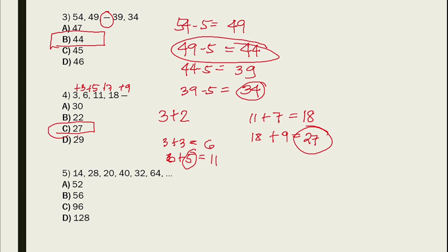We are now on number 5. What have we observed about number 5? There are 2 categories here — two alternating rules in this series.